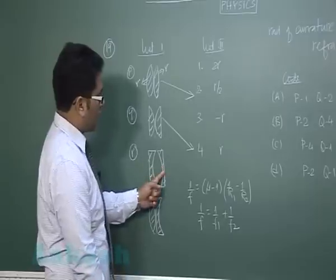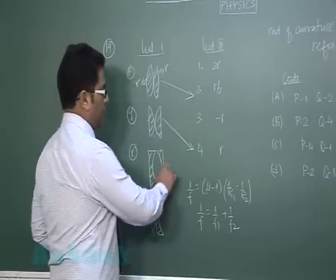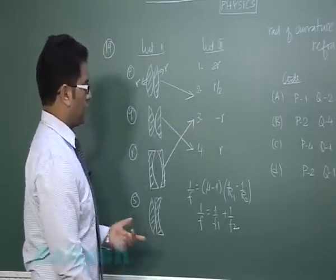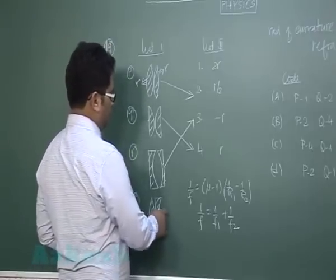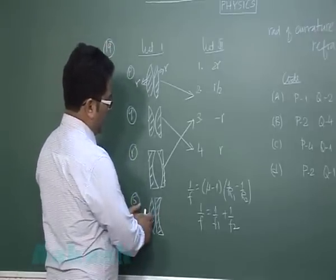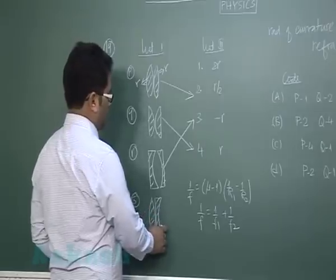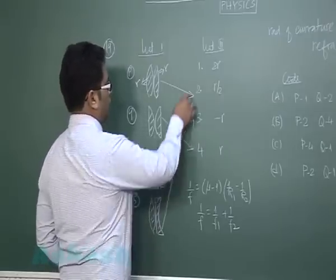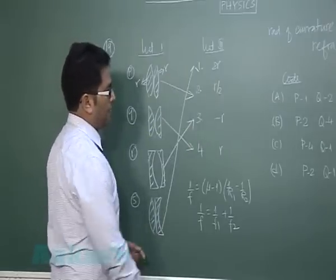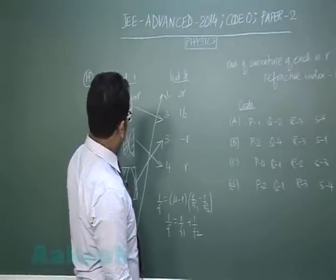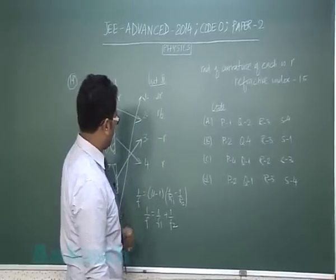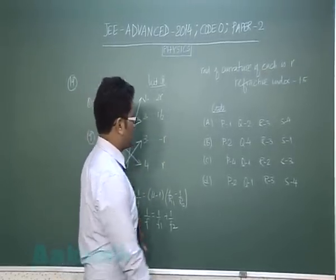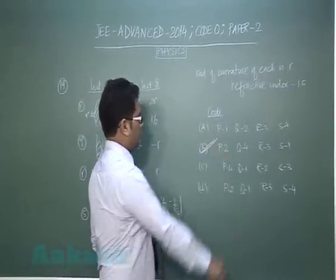Minus 2r and of course the remaining one, even if you need not verify, but still if you want, this is r and this is minus 2r and the final focal length will go for this. So you would see P is going with 2, Q is going with 4, R is going with 3, S going with 1, which leads us to option number B.